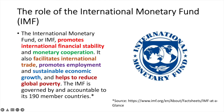The following explanation of the IMF's role is taken from the article 'The IMF at a Glance', available on the IMF website as referenced below the image and in the video notes. The International Monetary Fund promotes international financial stability and monetary cooperation. It also facilitates international trade, promotes employment and sustainable economic growth, and helps to reduce global poverty. The IMF is governed by and accountable to its 190 member countries.